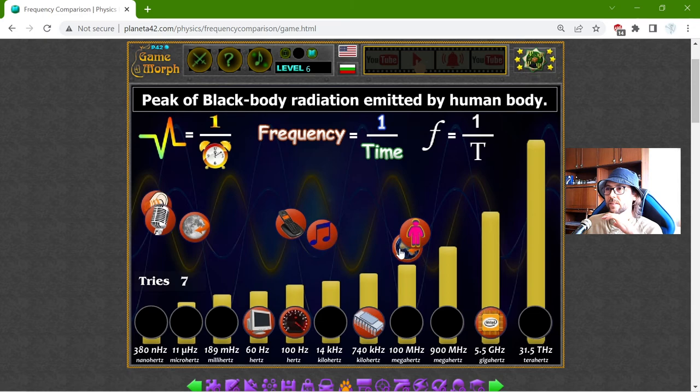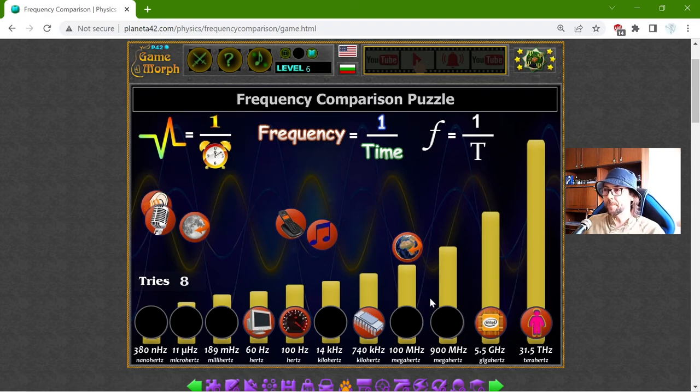What is this? Ah, the peak of black body radiation emitted by human body. Whatever that mean. I think this is the biggest frequency on this scale.